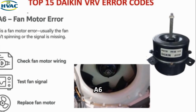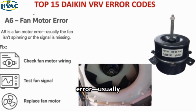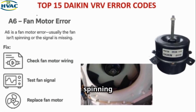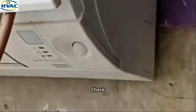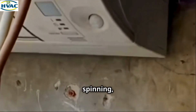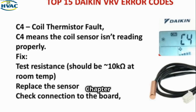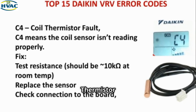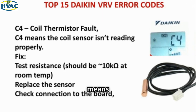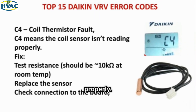Chapter 6 — A6: Fan Motor Error. A6 is a fan motor error — usually the fan isn't spinning or the signal is missing. Fix: Check if the fan is spinning, inspect fan motor wiring, and replace the fan motor if necessary.